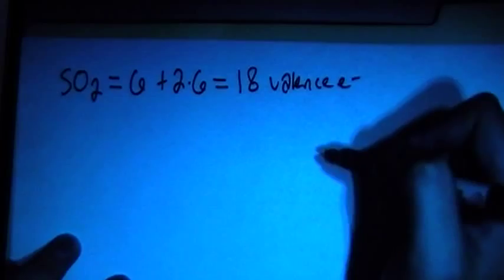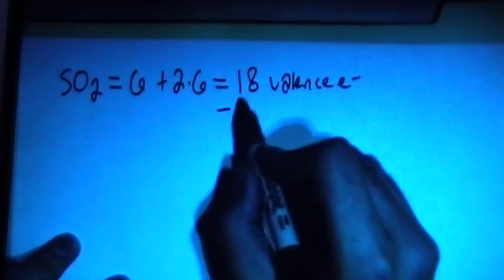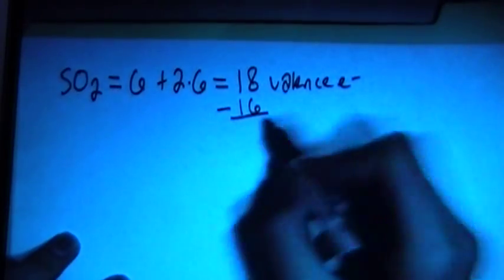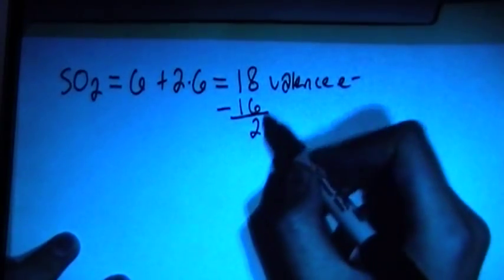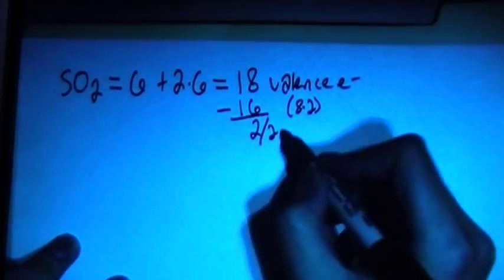And we can go ahead and use my trick where we subtract the largest multiple of 8 from this total. So that's going to be 16, gives us 2 remaining, and now 16 is equal to 8 times 2, and then 2 divided by 2 equals 1.